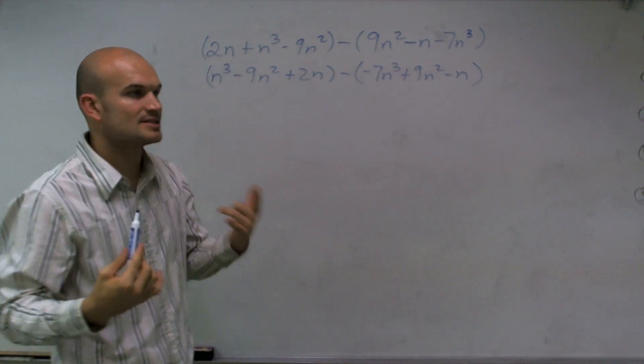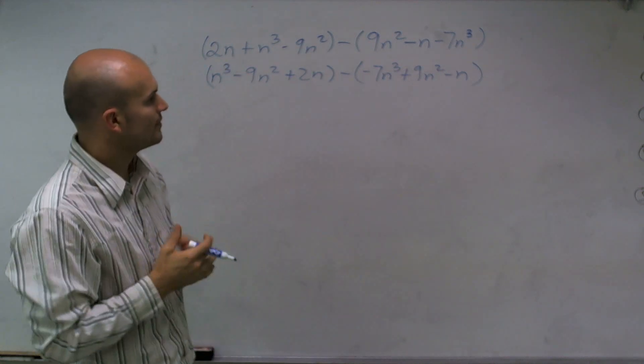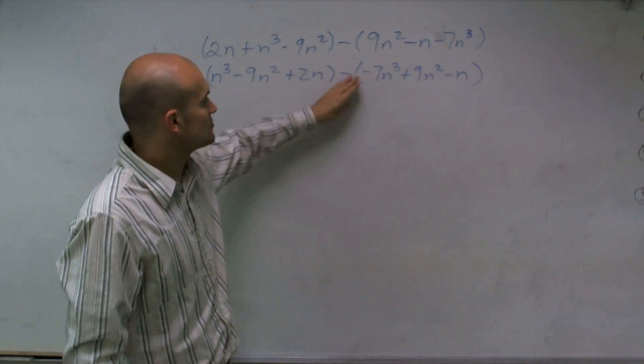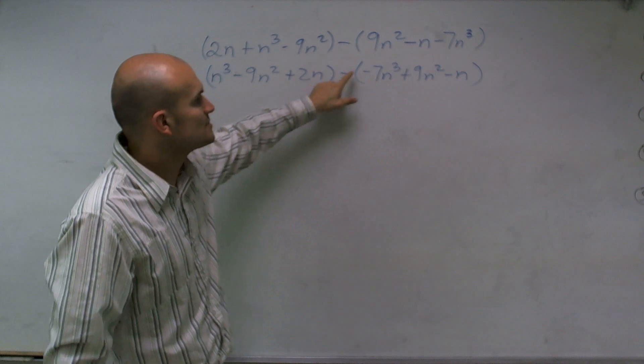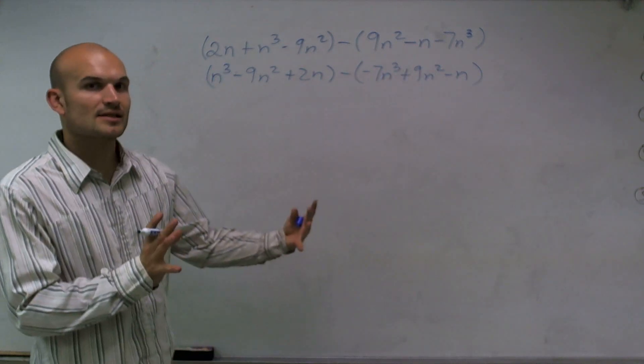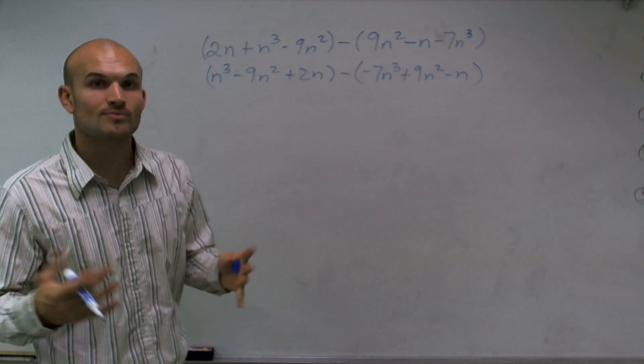Now there's a couple of different ways we can subtract. One way is to distribute the negative sign, because remember, I'm not subtracting just a negative 7n cubed. I'm subtracting all three of these terms. Or what we can simply do is set them up vertically. And actually, I'm going to show you both methods in here.